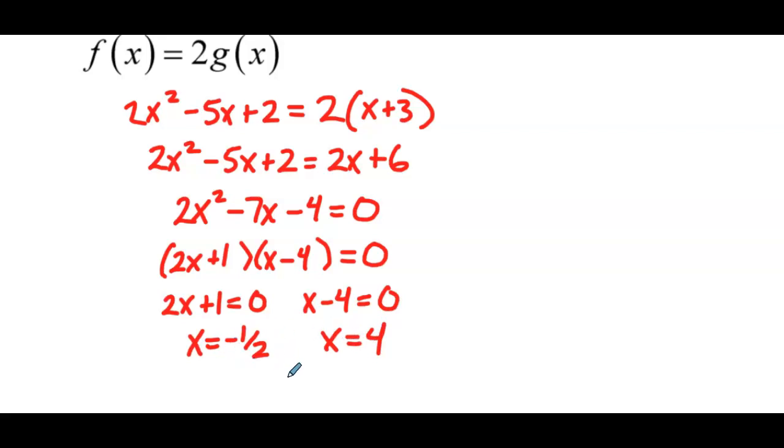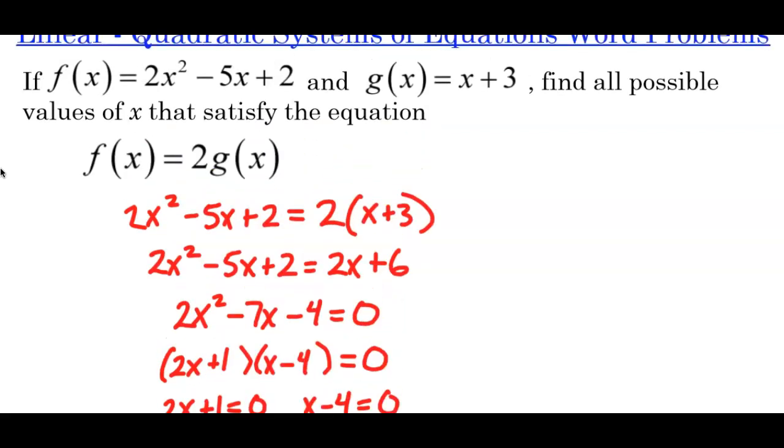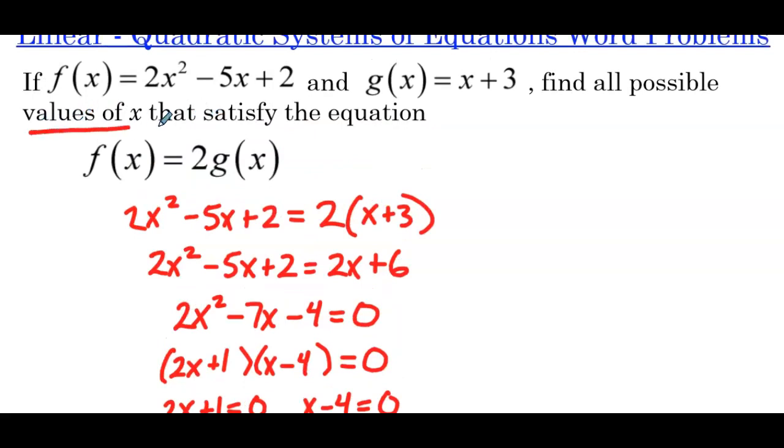Now typically when we're solving a system, a linear quadratic system to be more specific, not only do we have to find the x values, but we have to find the y values for the points of intersection. But in this case, they're only asking us for the values of x. And the reason being is the equation they defined is only in terms of the variable x. So really, it would only have the solution of x, right?